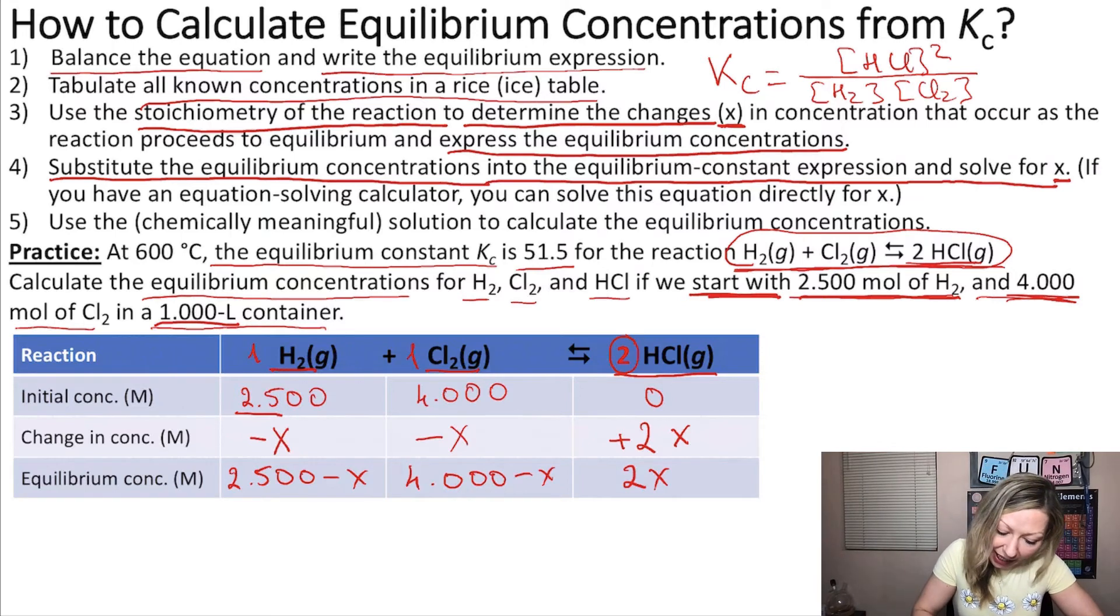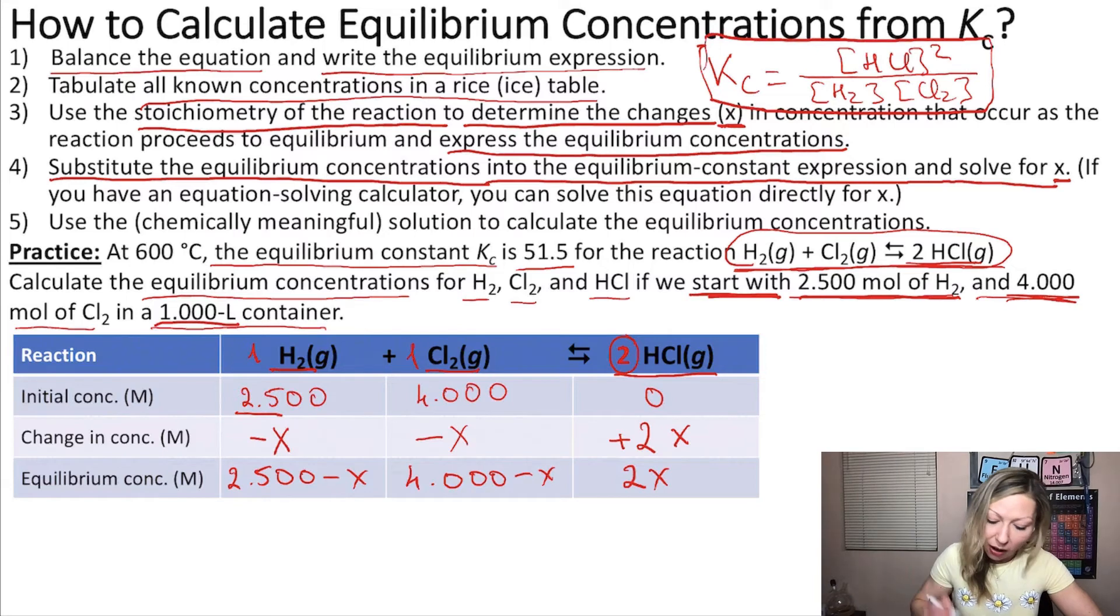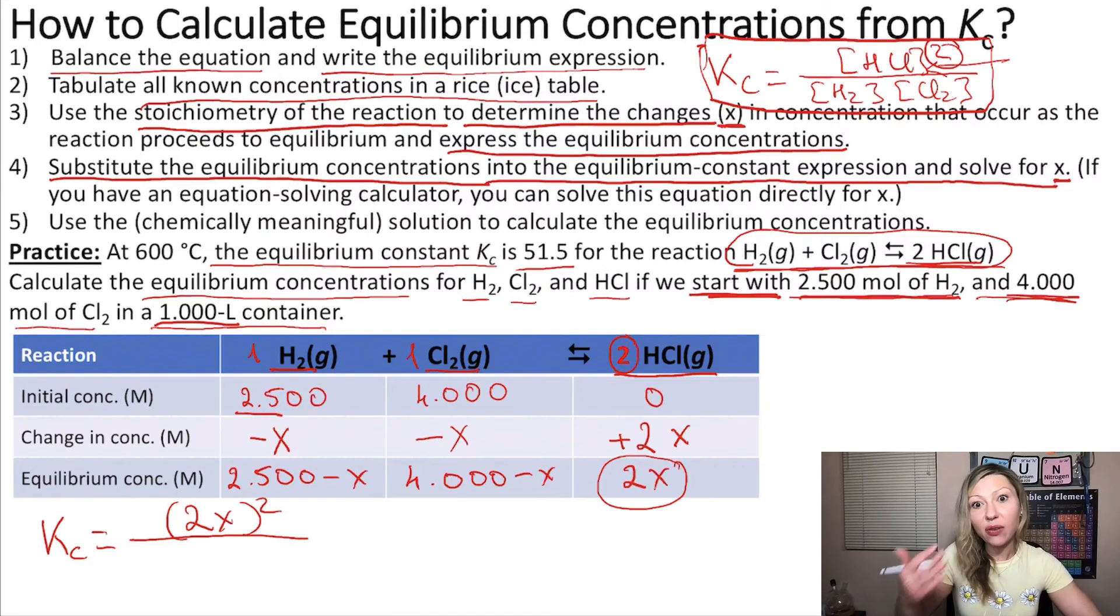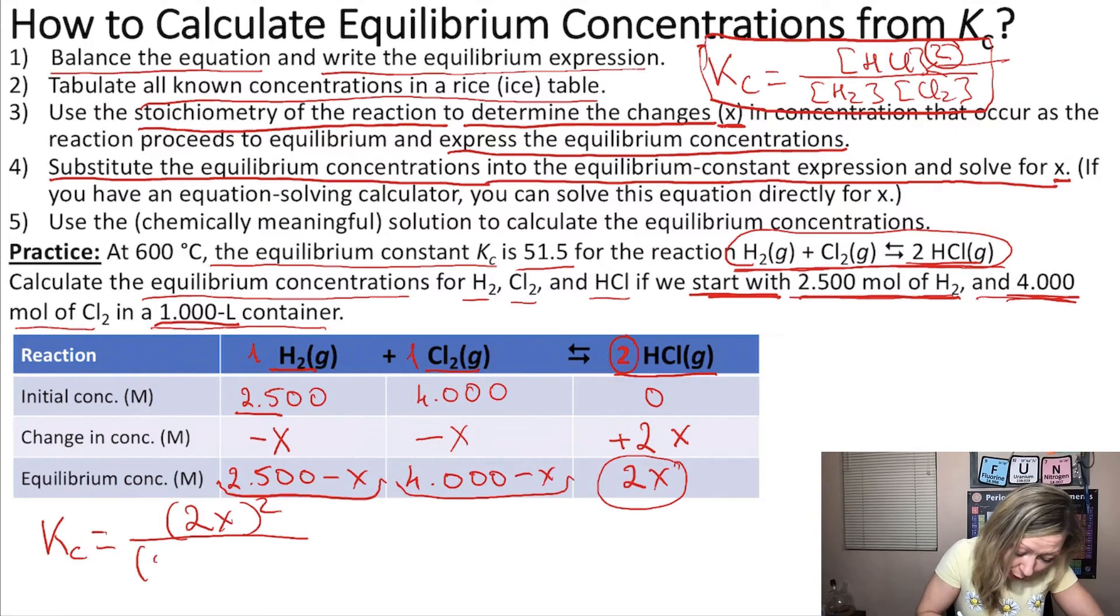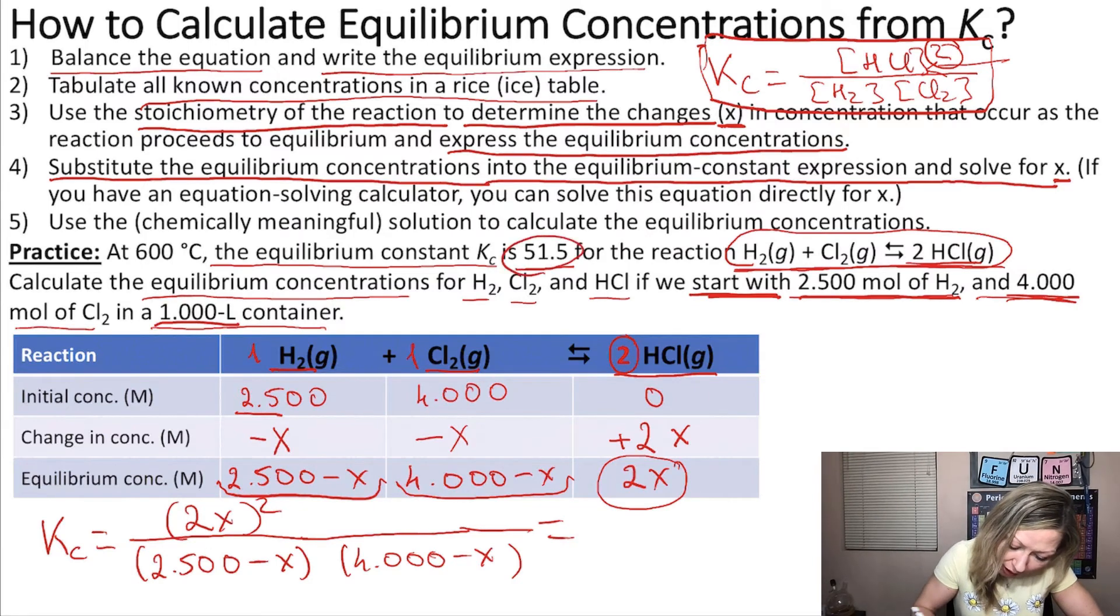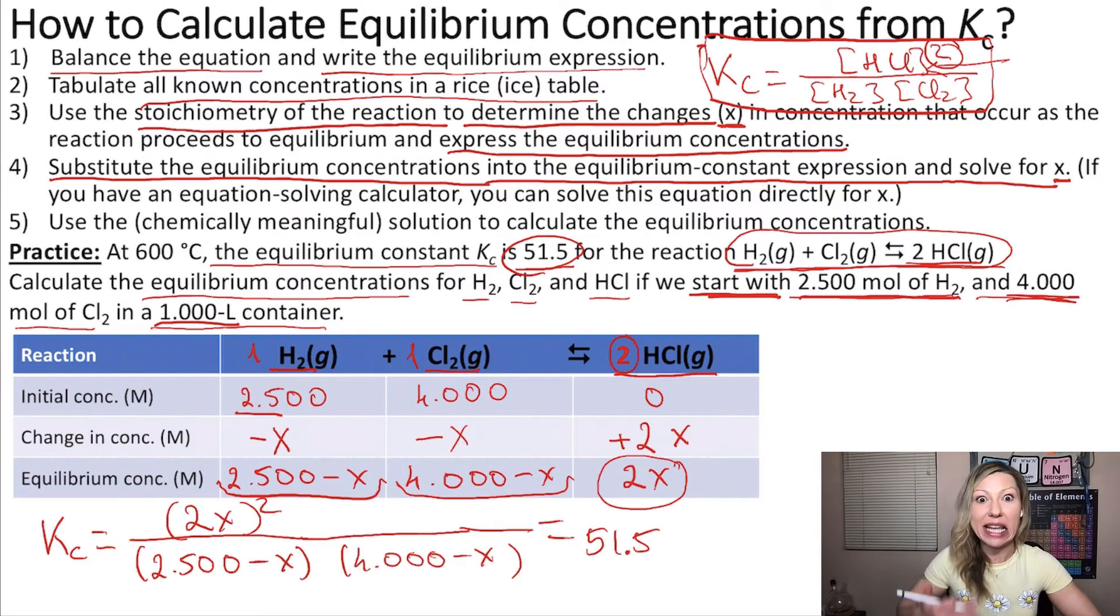Then I can substitute the equilibrium concentrations into the equilibrium constant expression to solve for X. So now, let's take a look at the expression that we wrote out at the beginning. So here we have on top the concentration at equilibrium of HCl, the product. So I can use simply 2X to substitute for that. So my Kc will equal to 2X squared, because this is also squared right here, divided by the equilibrium concentrations of H2 and Cl2. So I'm going to use these equilibrium concentrations right here. So 2.500 minus X multiplied by 4.000 minus X. And this whole expression actually equals to 51.5 because that was given to me in the question.